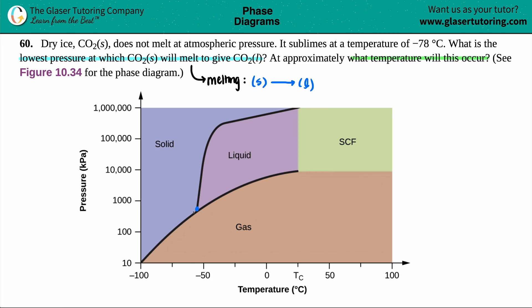This is the lowest point where a solid can cross over into a liquid. Anything below this, the solid would convert into a gas, and that is not melting. Now we just have to find out what the pressure is here.